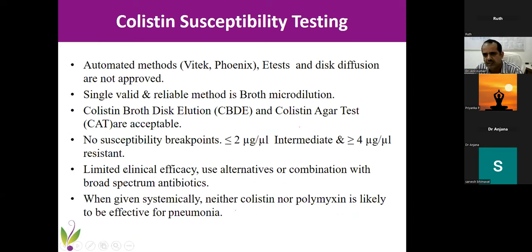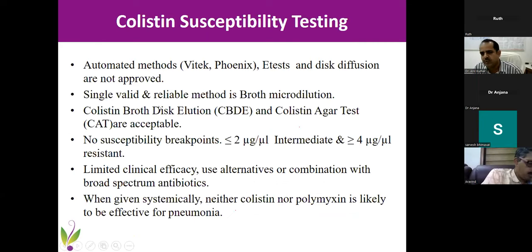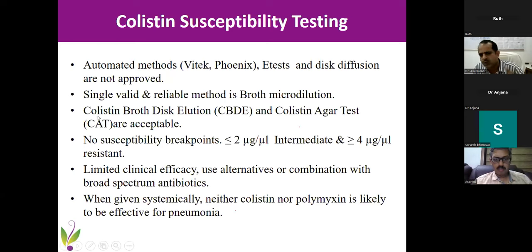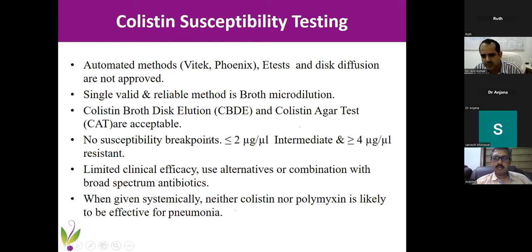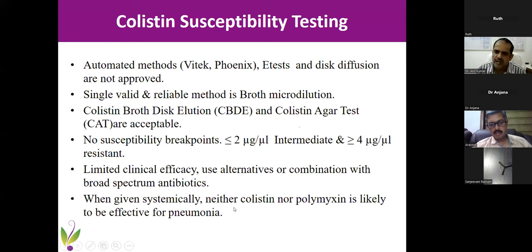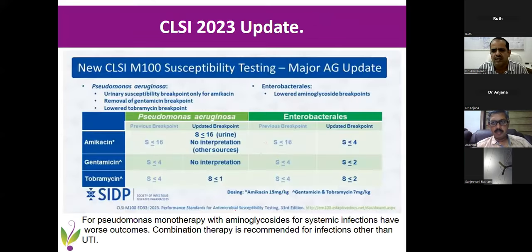Colistin is the most controversial antibiotic. Neither e-test, nor automated VITEK or Phoenix systems are reliable for colistin susceptibility. The only reliable method is broth microdilution, which is tedious and labor-intensive with controls required for every run. There is no susceptible breakpoint for colistin — below 2 micrograms is intermediate and above 4 is resistant. Don't expect the microbiologist to report colistin as sensitive. Colistin has poor spectrum and requires combination with another broad-spectrum antibiotic. It has no effect in pneumonia — neither IV nor inhaled. So it is not a good option for CRE nowadays.